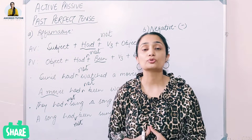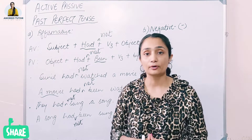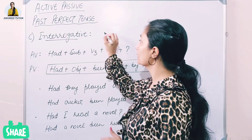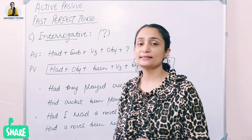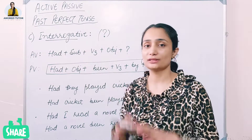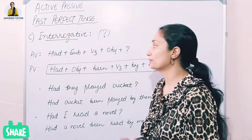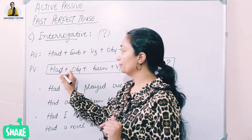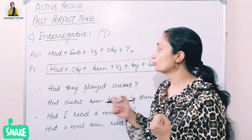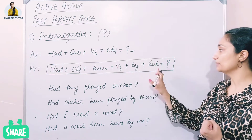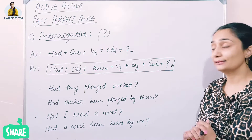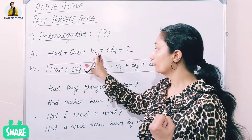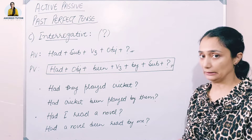Third type is interrogative sentences. In interrogative, the question mark plays an important role. The active structure is: Had + Subject + Verb (third form) + Object + ? For passive, we rearrange to: Had + Object + been + Verb (third form) + by + Subject + ?